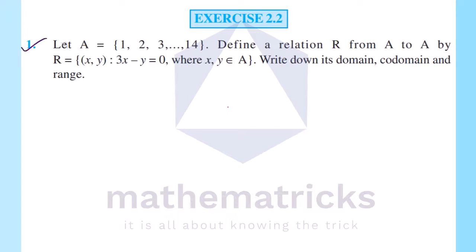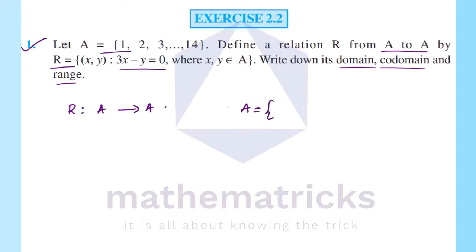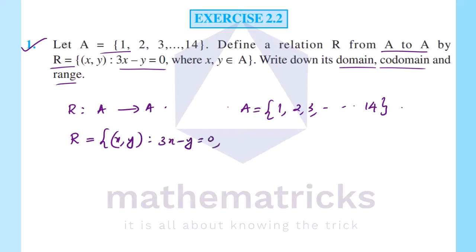First question: let A be equal to the set {1, 2, 3, ..., 14}. Define a relation R from A to A by R is equal to the set of all (x, y) such that 3x minus y equals 0, where (x, y) belongs to A. Write down its domain, co-domain and range.